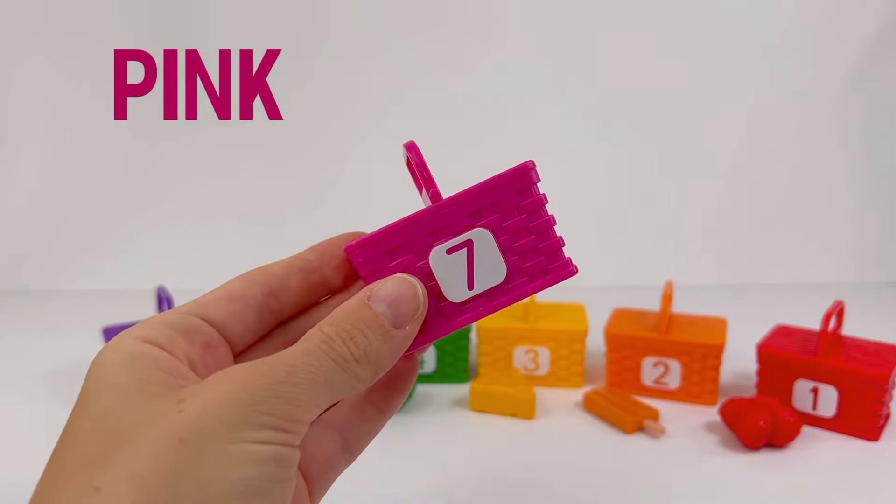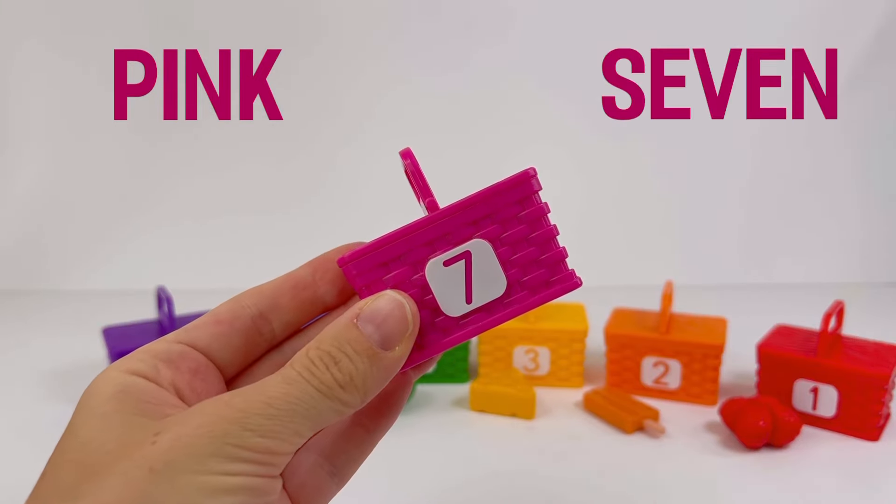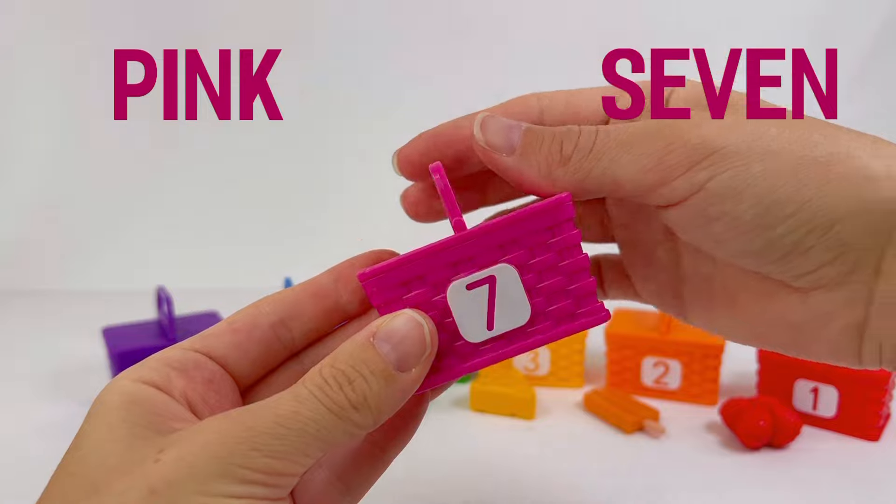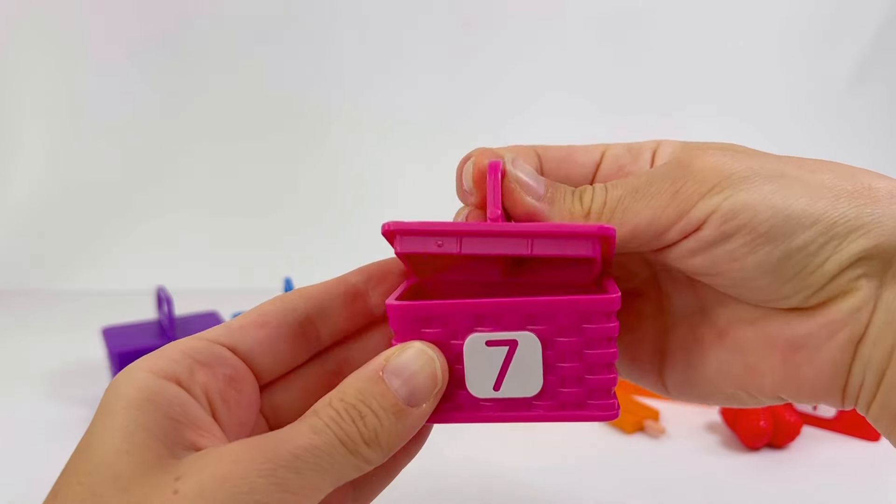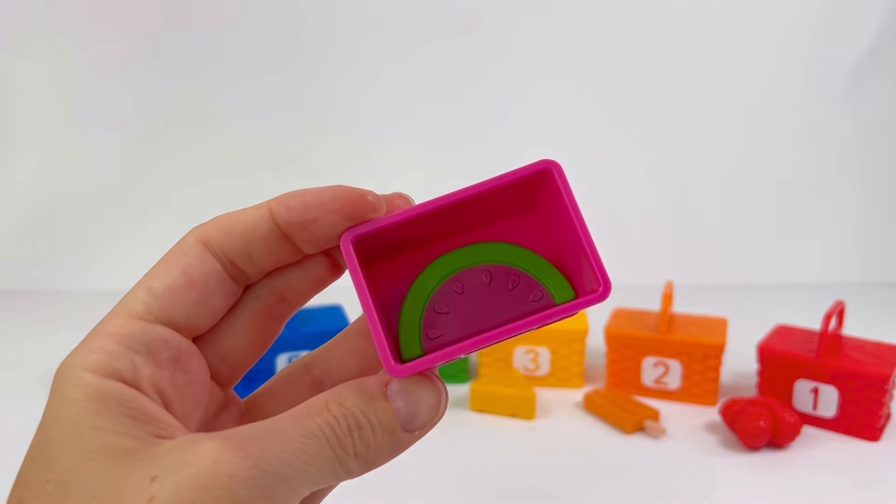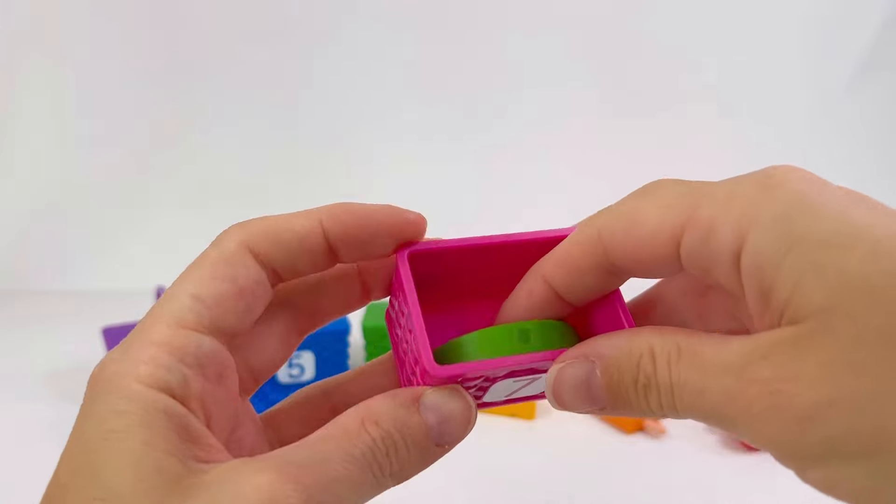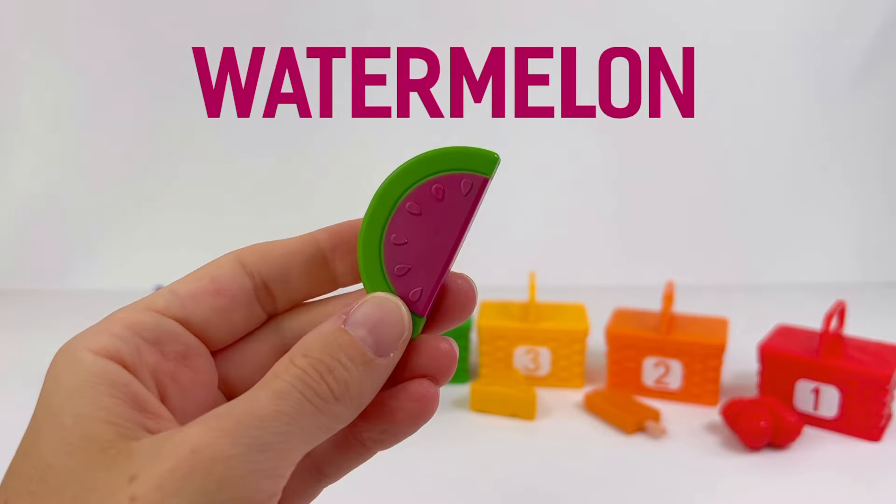This is a pink picnic basket with a number seven on it. Inside it has a slice of watermelon.